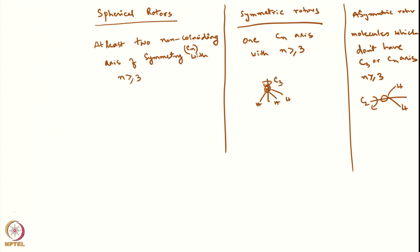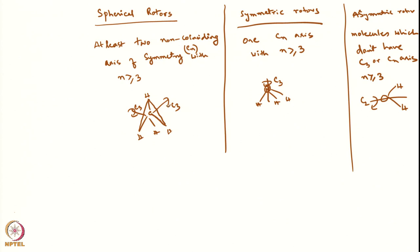For methane, if you think of one plane and another plane, each plane will have one C3 axis. There will be one C3 axis here and another C3 axis there. Since there are two C3 axes which do not coincide with respect to each other, methane becomes a spherical rotor. One can look at textbooks for how various molecules are classified as spherical, symmetric, or asymmetric rotors.